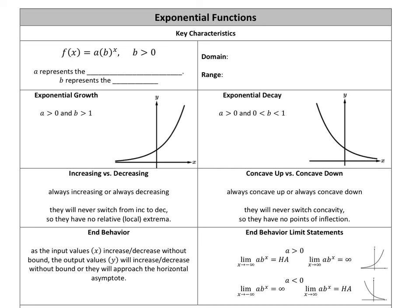Key characteristics of exponential functions: the basic form is f(x) = A times B to the x power. A represents the initial value — also your y-intercept. B represents the base, the factor you're multiplying by each time. Exponential functions have no restriction on domain — negative infinity to infinity — but they do have a restriction on range. Both growth and decay graphs flatten out, so the range is from zero to infinity. Zero is the horizontal asymptote, and we use a parenthesis because the graph never actually touches zero — it approaches zero but doesn't reach it.